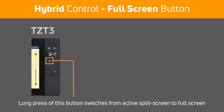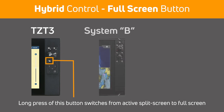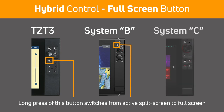On systems that had the hybrid control keyboard, like the TZ-T12F, each has a dedicated key that you can perform a long press on to go to full screen from the active split screen. For System C, this was the only way we found to switch to a full screen.